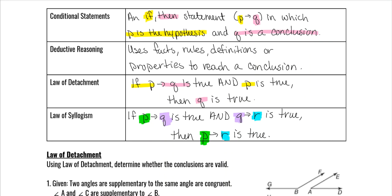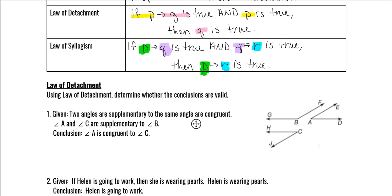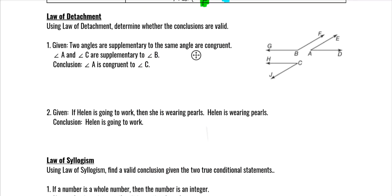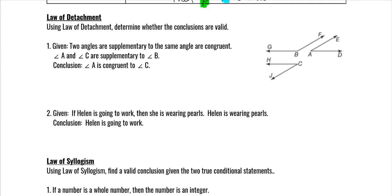Now for the Law of Detachment — that's my yellow and pink pattern. Using the Law of Detachment, determine whether the conclusions are valid. Everything has to be true for it to work. The statement is: 'Two angles are supplementary to the same angle' — that's the hypothesis — 'are congruent' — that's the conclusion.